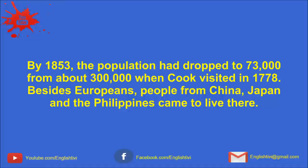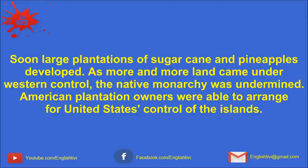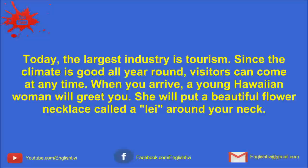Besides Europeans, people from China, Japan, and the Philippines came to live there. Soon, large plantations of sugarcane and pineapples developed. As more and more land came under Western control, the native monarchy was undermined. American plantation owners were able to arrange for United States' control of the islands. Today, the largest industry is tourism. Since the climate is good all year round, visitors can come at any time.